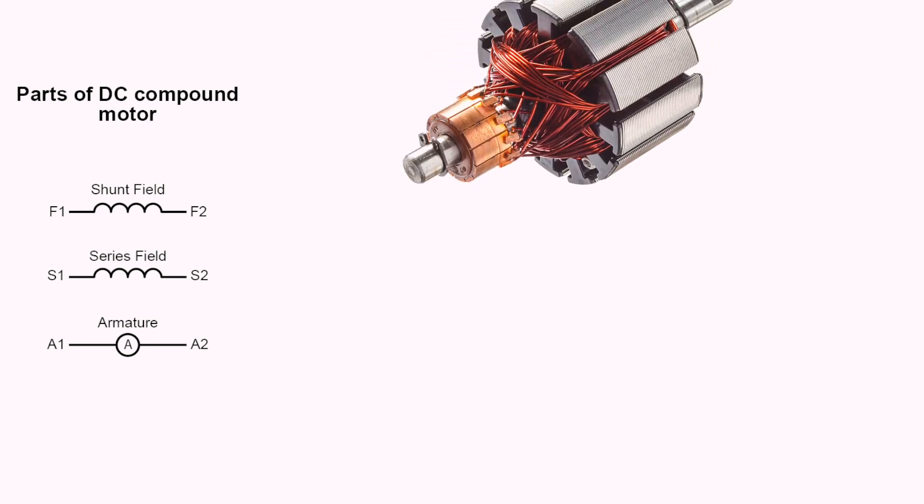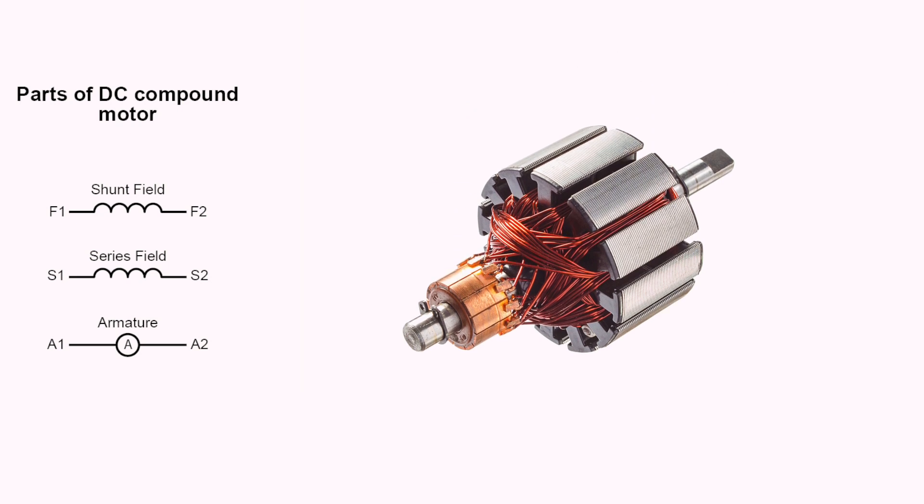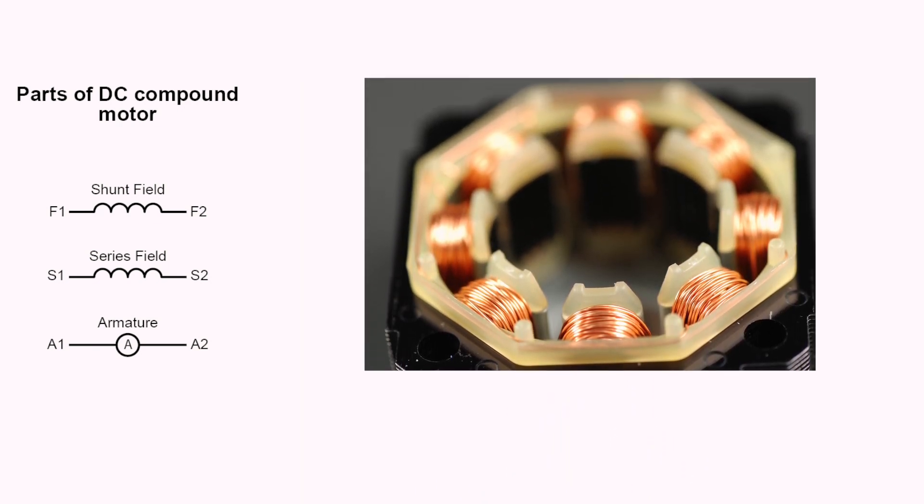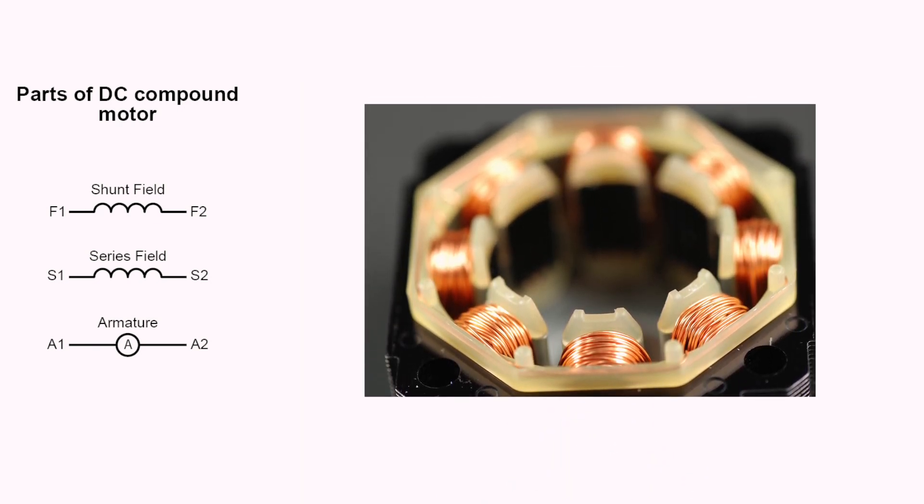These symbols that you see here are used to identify the basic parts of a DC compound motor. The rotating part of the motor is called the armature. The stationary part, which contains the series and shunt field winding, is called the stator. A1 and A2 are the armature leads. S1 and S2 are the series field leads. And F1 and F2 are the shunt field leads.